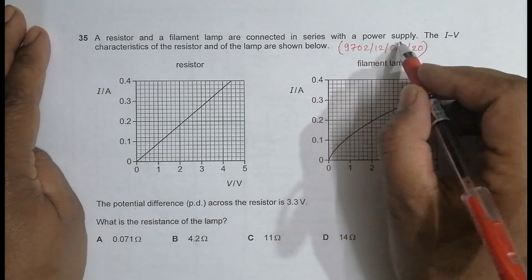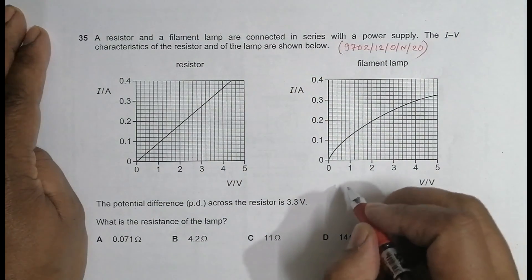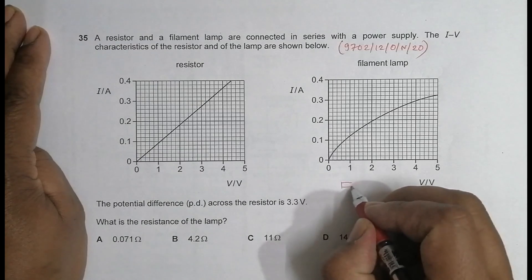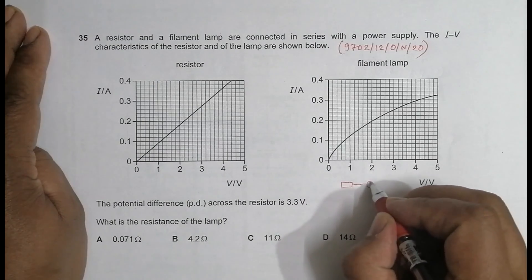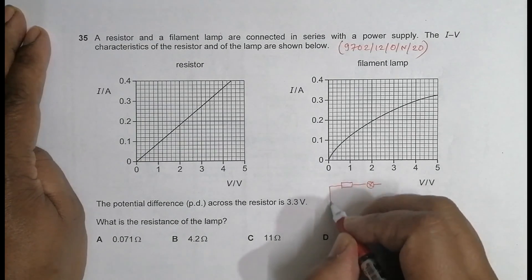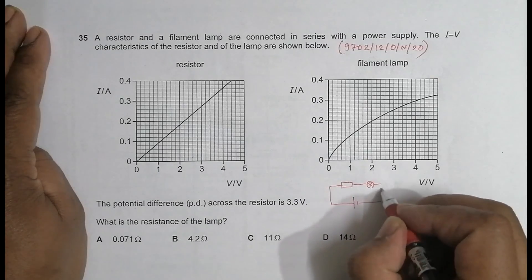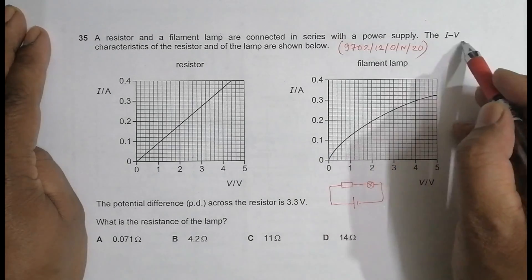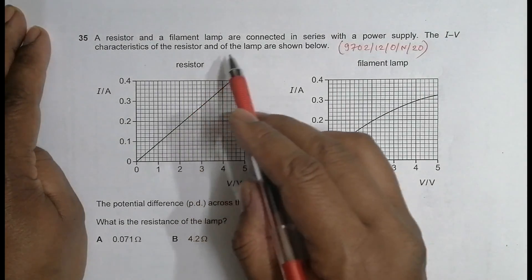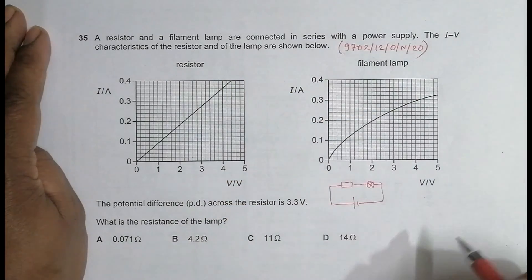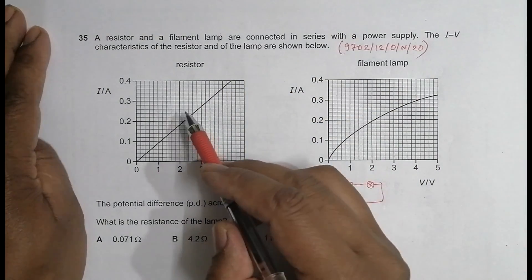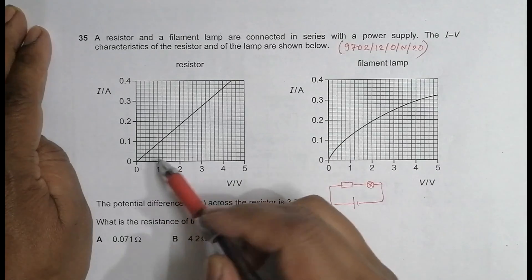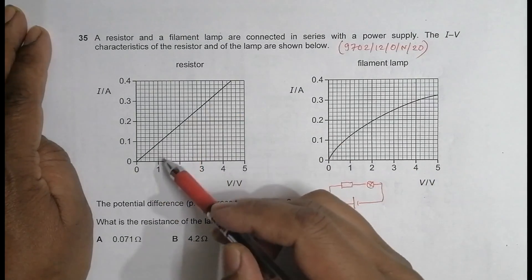There should be many, so this is a resistor, this is a filament lamp, they are connected in series with our power source. The I-V characteristics of the resistor and of the lamp are shown below. So for the resistor, what you have is a straight line through the origin.